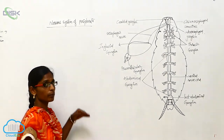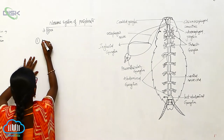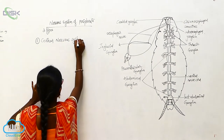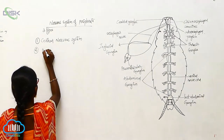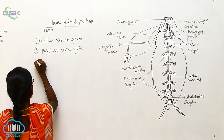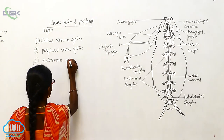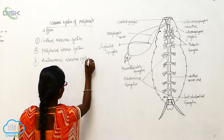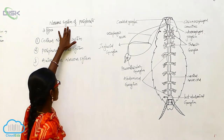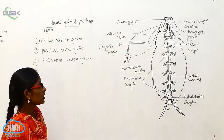The nervous system of Periplaneta divides into three types: the central nervous system, peripheral nervous system, and autonomous nervous system.